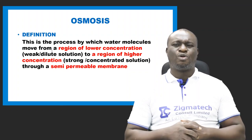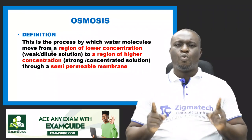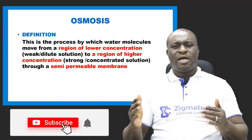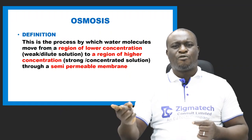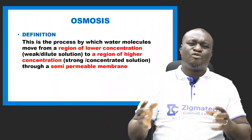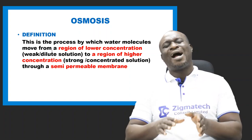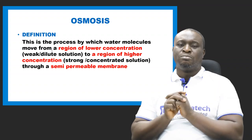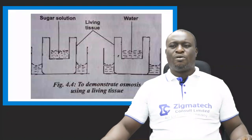In terms of osmosis, it involves water molecules only. One importance of osmosis is the movement of water and mineral salts from the soil to the roots and from the roots down to the leaves — the movement of water molecules from a region of lower concentration to a region of higher concentration through a semi-permeable membrane. Osmosis is also very important in transport system.